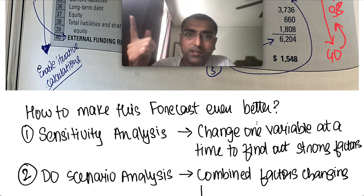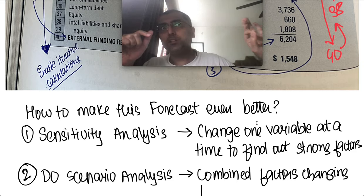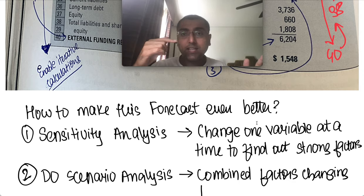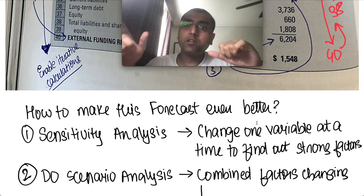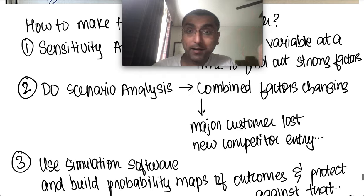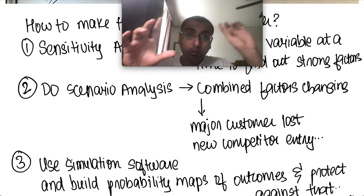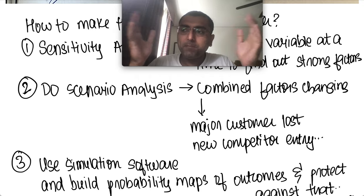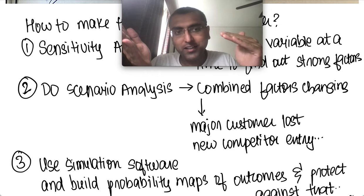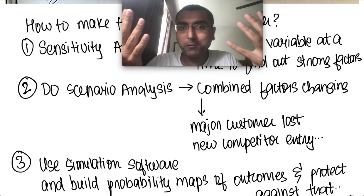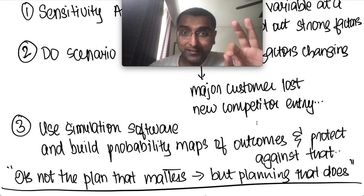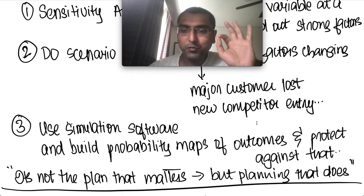To make the forecast even better, you can do sensitivity analysis — for example, saying your accounts receivable will get worse due to COVID. You examine the stress factors and strong impacts. You can also do scenario analysis — like anticipating Amazon entering your market and squeezing margins, or losing a major customer. You can even use simulation software that gives probability distributions of expected outcomes. At some point you have to stop, but remember: it's not the plan that matters, it's the planning.